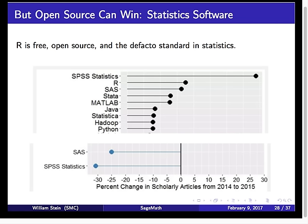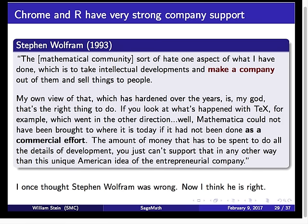R is a great example of statistics software that's been fantastically successful — it's now the de facto standard in statistics, really, really good, with thousands of packages. Coming back to Wolfram quotes, here's one I used to think was totally wrong and strongly disagreed with, but now I think he's right. Both Chrome and R have strong corporate support. One of the biggest backers of R is Microsoft. There was a company called R Evolution that spun off from Yale, did a lot to improve R, and then Microsoft bought them a couple of years ago.